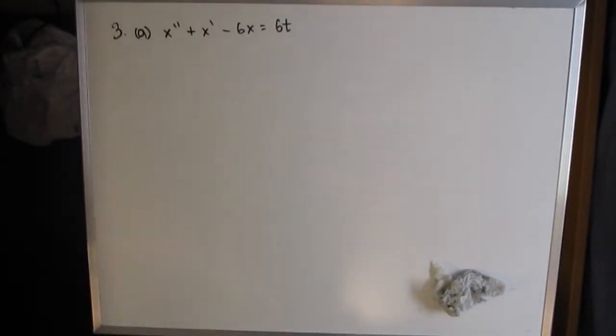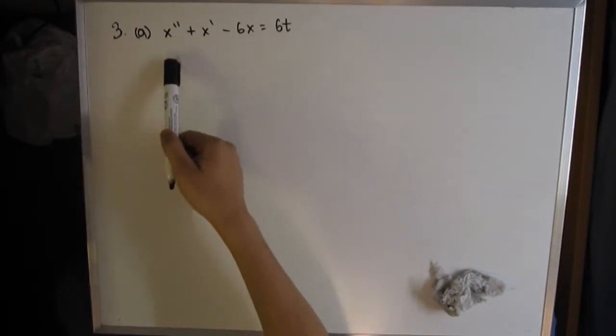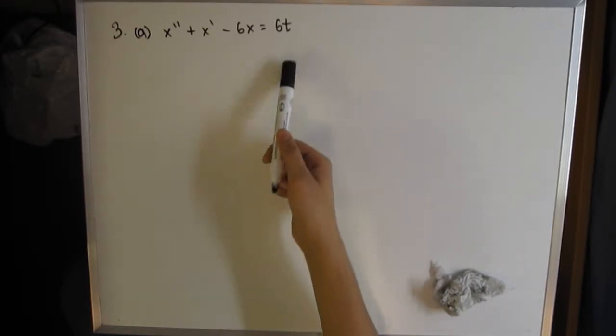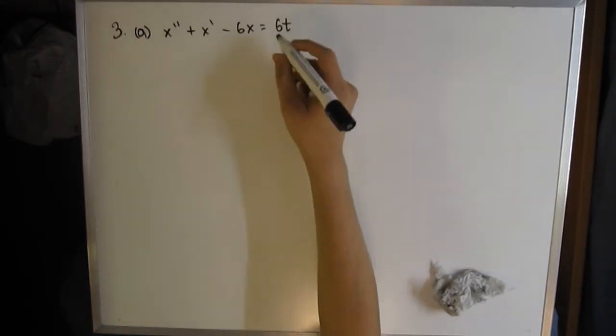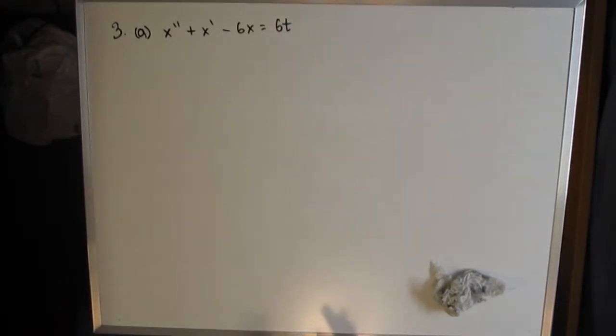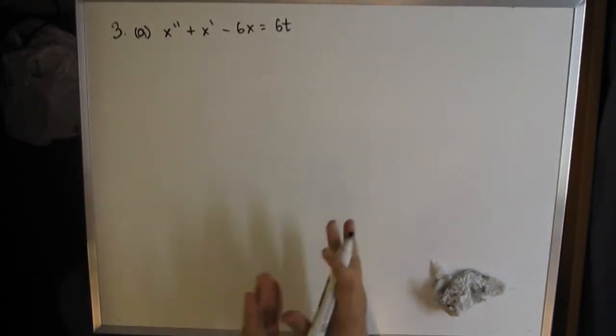Hi, here we are with assignment 2, question 3a. We're given something slightly different from the previous questions, which is the second derivative of x plus the first derivative of x minus 6x equals 6t. We're not used to having something on the right-hand side till now, and that makes it slightly trickier.